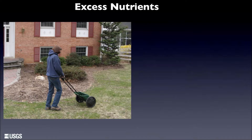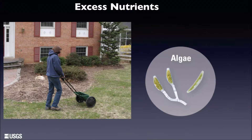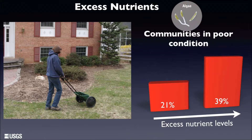Linking nutrient data with biological communities, we find that algae communities are extremely highly associated with nutrients in the stream. The occurrence of algae communities in poor condition increased nearly 40% as nutrient levels increased, across different land uses and the country as a whole. Algae absorb nutrients directly from the water column and are therefore very good early warning indicators of the ecological consequences of excess nutrients.